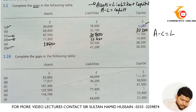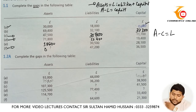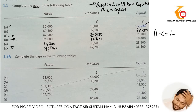In part F, you need to add 47,200 plus 36,500 and you will get assets of 83,700.